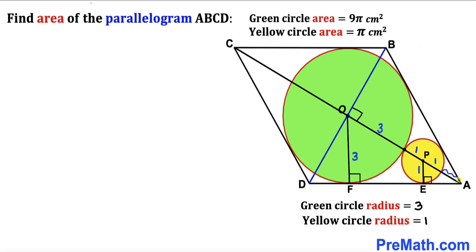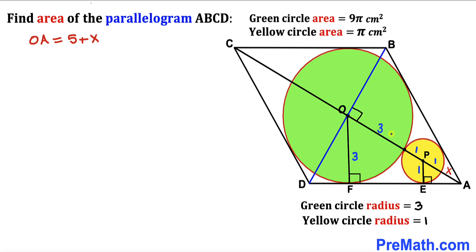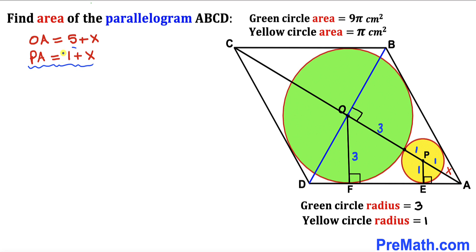Let's call the remaining segment x. The full length OA is therefore 3 + 1 + 1 + x = 5 + x. And the length PA is 1 + x.